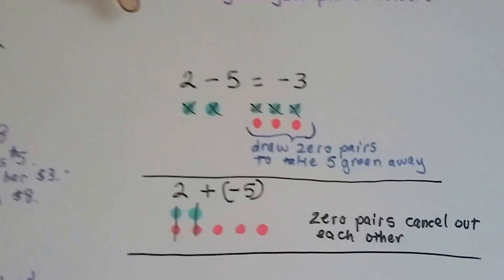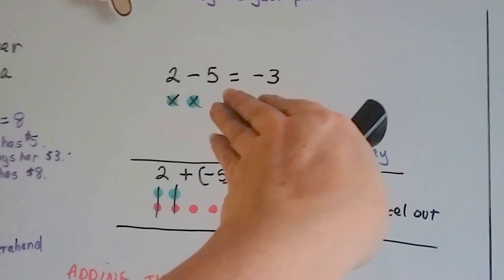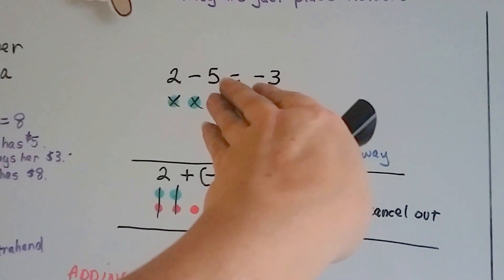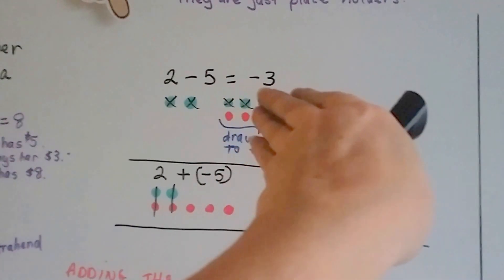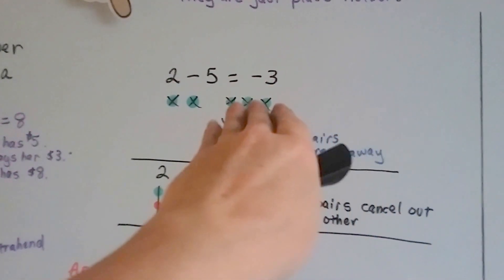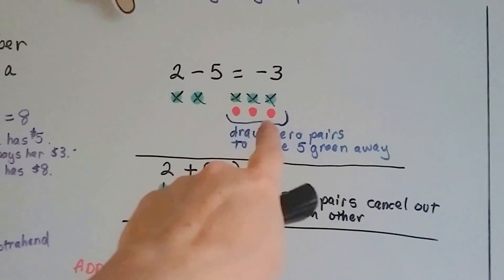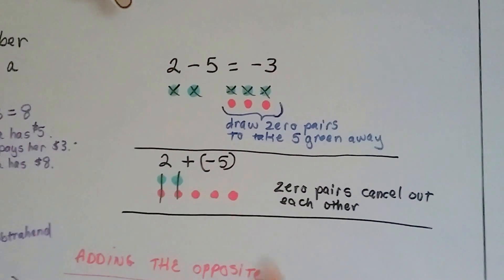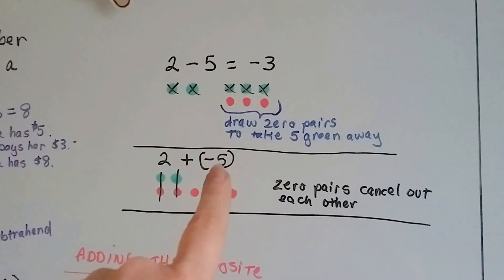Let's look at it this way. We've got a positive 2 and we want to take away positive 5. Well, we can't because we've only got a 2. So we add the zero pairs until we do have 5 green ones. Then we take the 5 green ones away and we're left with the leftovers of the 3 negatives. It's going to be the same thing as 2 plus a negative 5.